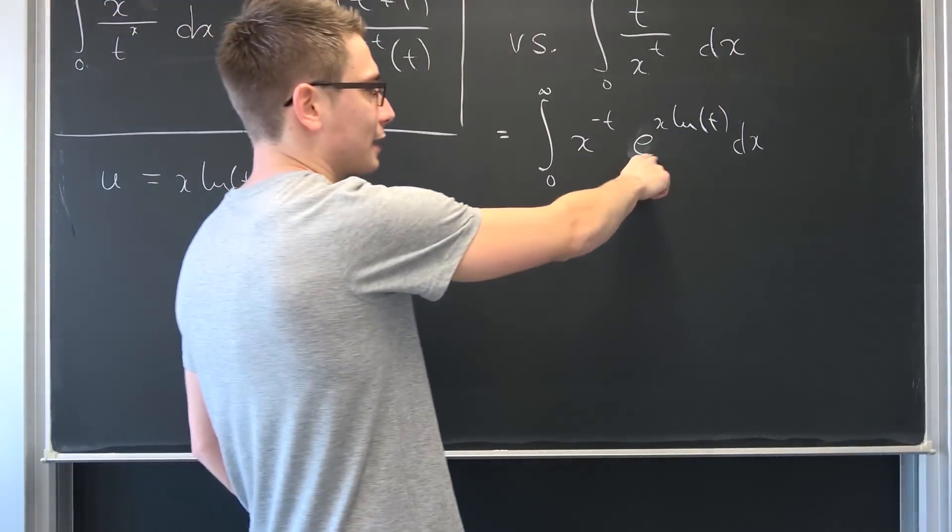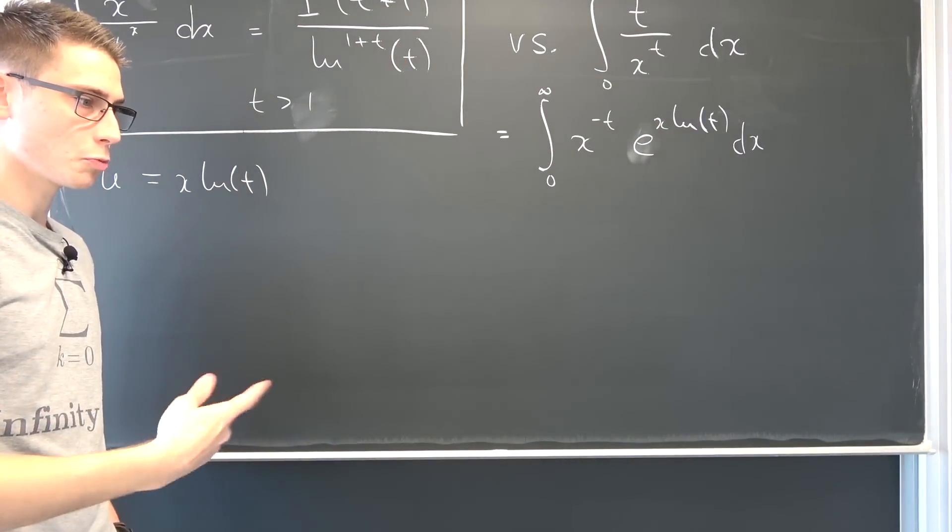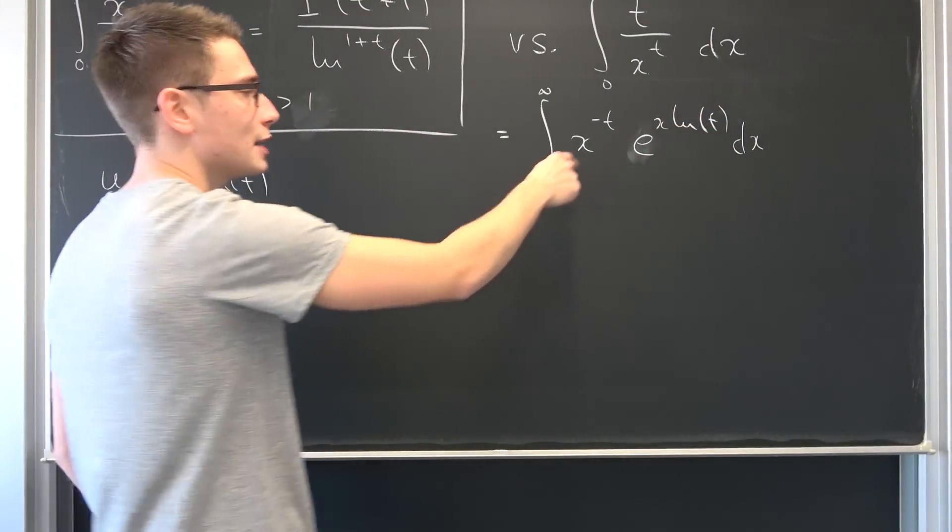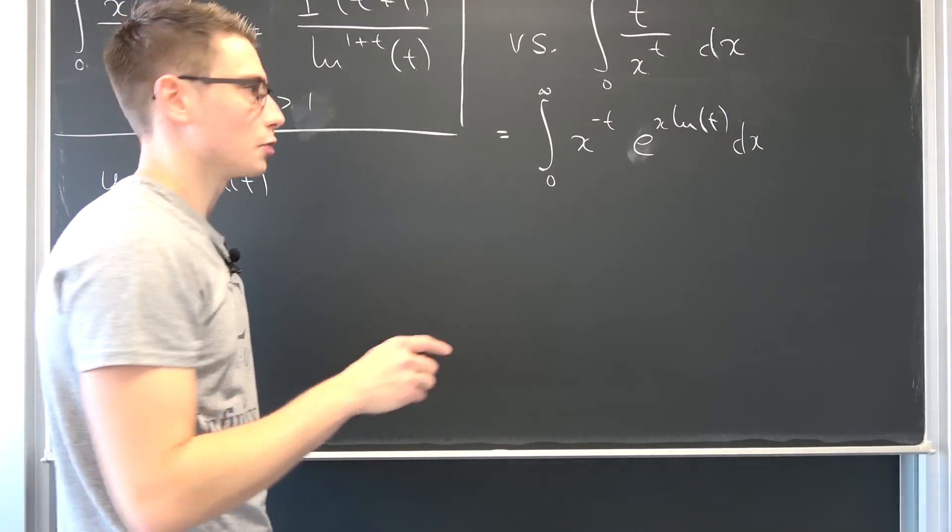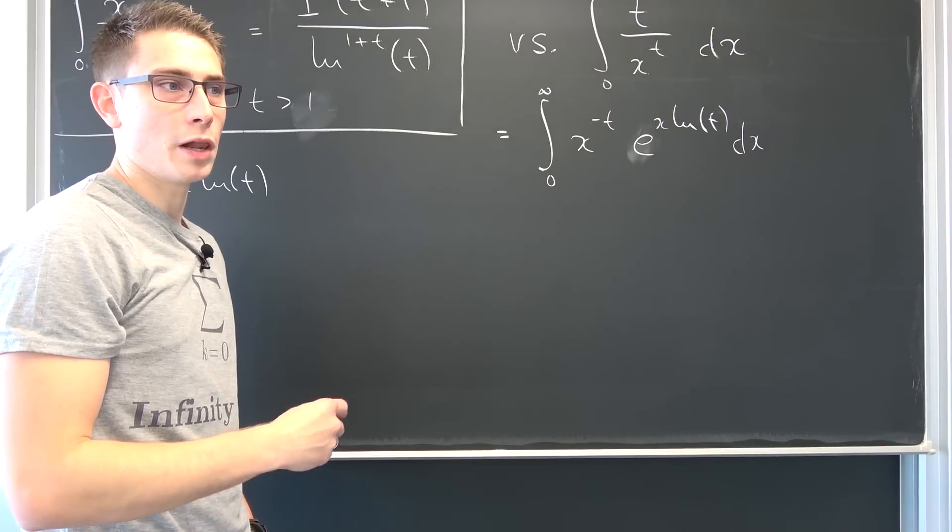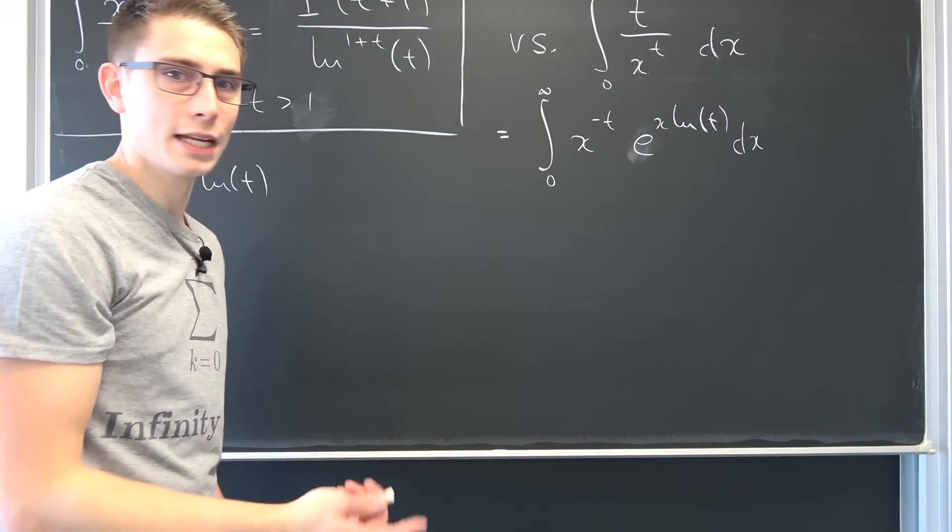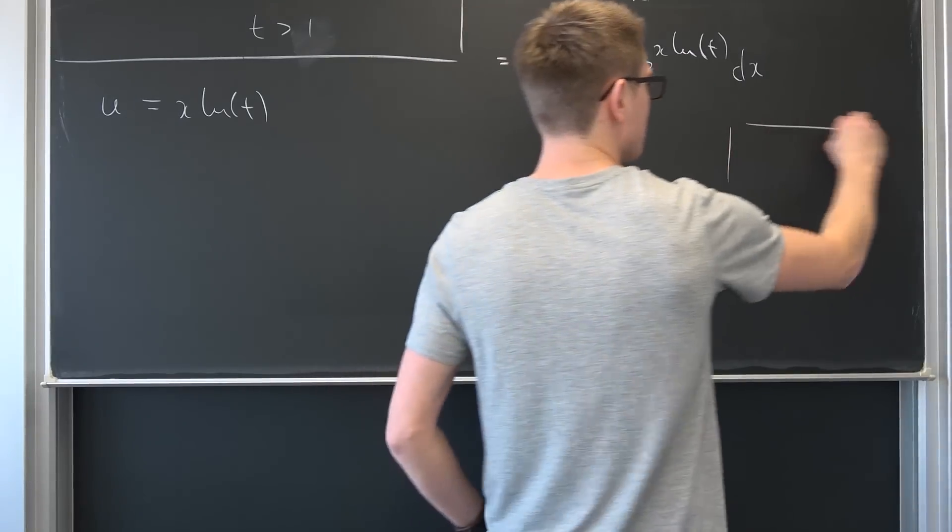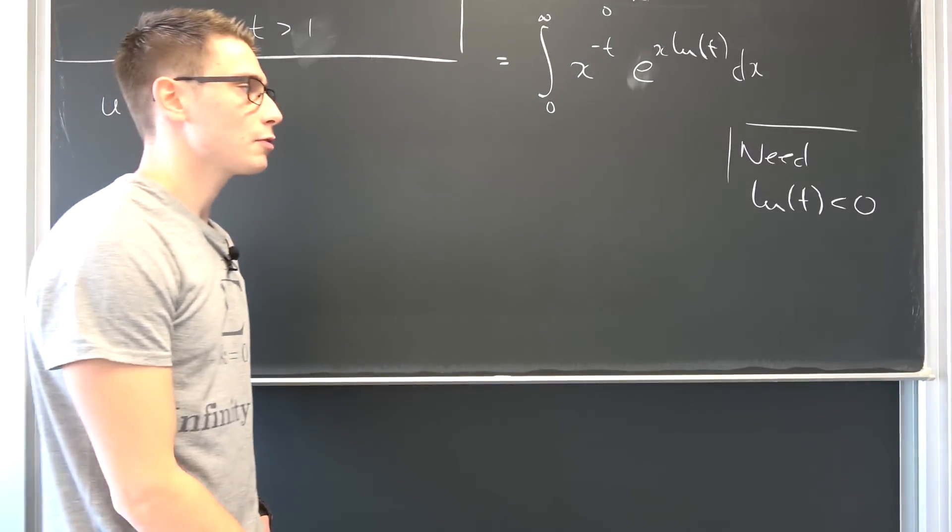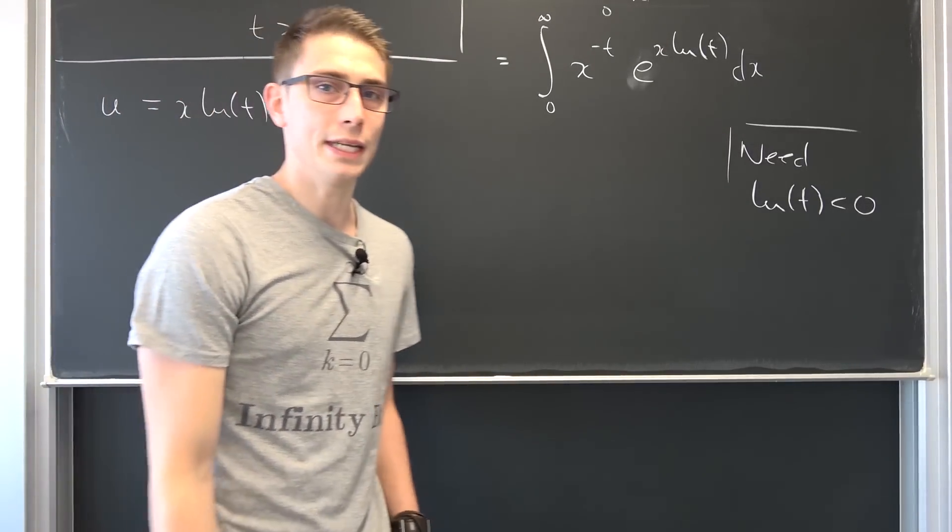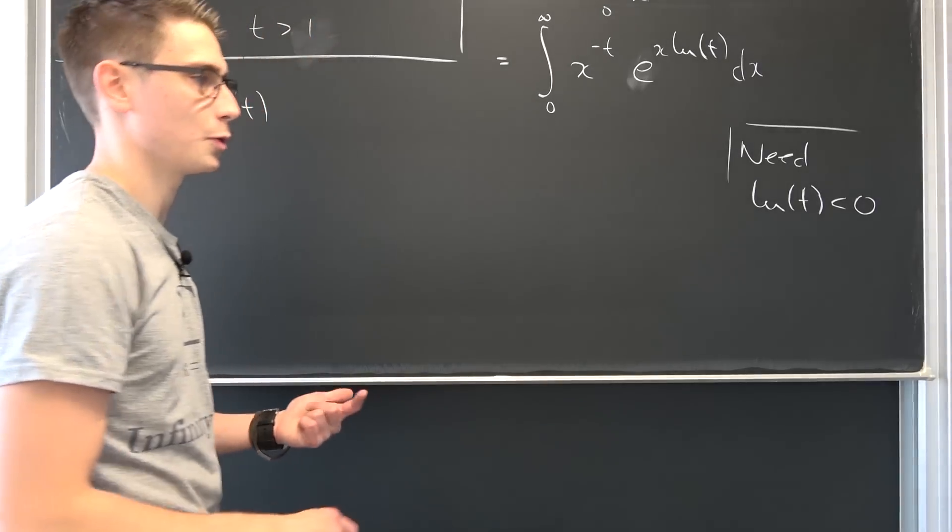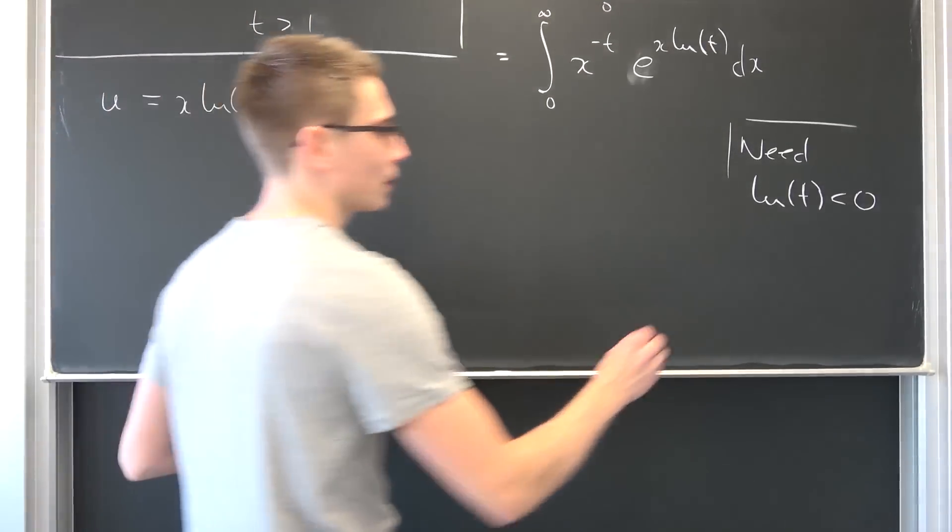Now our e to the x, if the natural log of t were to be greater than 0, then e to the something grows way faster than 1 over x to the t power, and this is not good. Our integral would become unbounded, it would not converge, meaning we need our natural log of t to be between 0 and negative infinity, meaning it needs to be negative. We need our natural log of t to be less than 0. What does it mean for natural log of t to be less than 0? We need our t to be strictly less than 1. I hope you can see where this does come from. It needs to be bounded between 1 and 0 in an open interval, meaning overall t needs to be strictly less than 1.